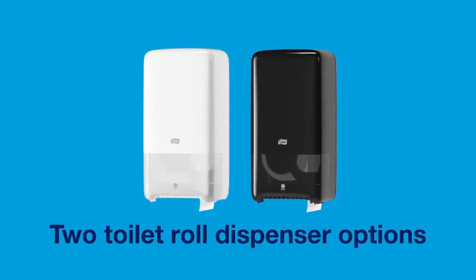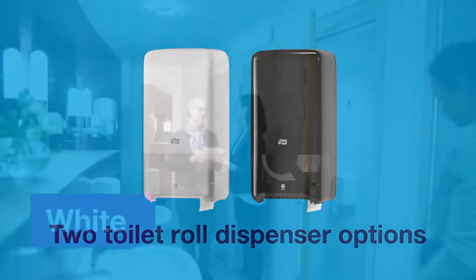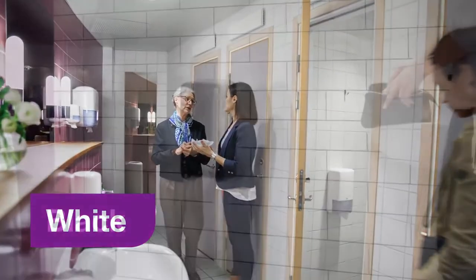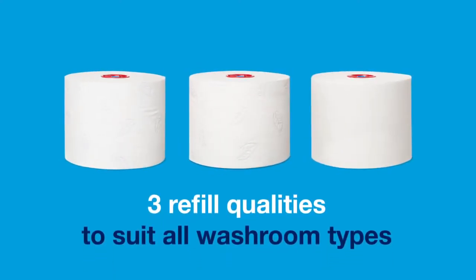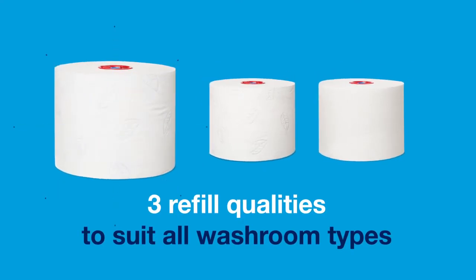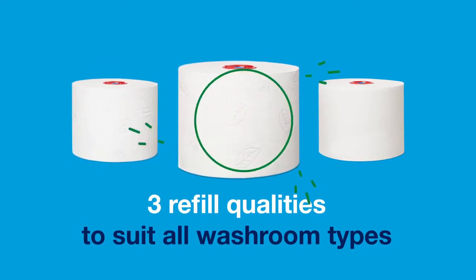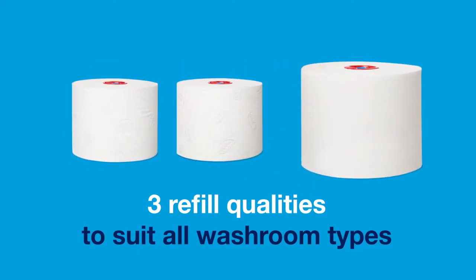Tork midsize toilet roll comes in two stylish dispenser options, white and black, and has three refill qualities to suit all washroom types: white two-ply soft, white two-ply, white one-ply.